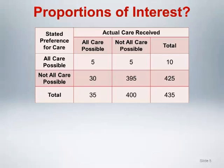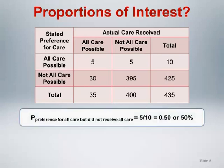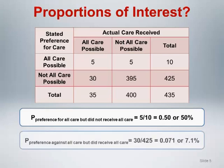We can see that a total of 10 patients stated a preference for all care possible. Of those 10 patients, 5 or 50 percent actually received all care possible and the remaining 5 did not. A total of 425 patients stated a preference against all care possible. Of those 425, 395 did not receive all care possible and the remaining 30, or 7.1 percent, did receive all care possible in opposition to their stated preference.